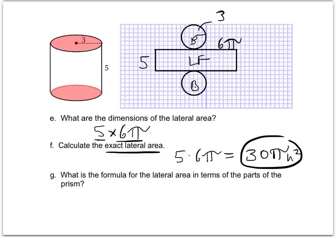For part G, the formula for the lateral area in terms of the parts of the cylinder: the lateral area equals the length of the lateral face, which is the circumference 2πr, times the width of the lateral face, which is the height. This lateral area is just represented by the area of that rectangle — 2πr times the height.